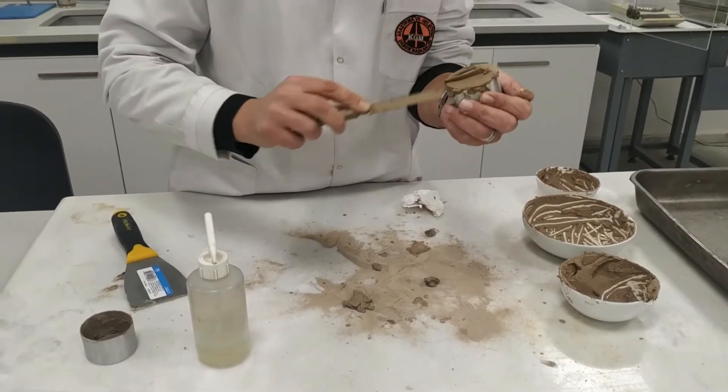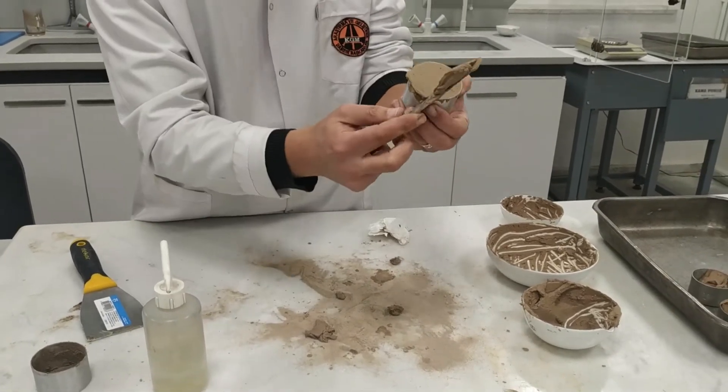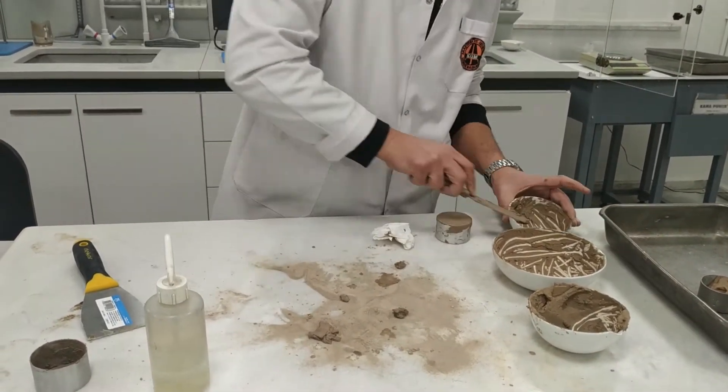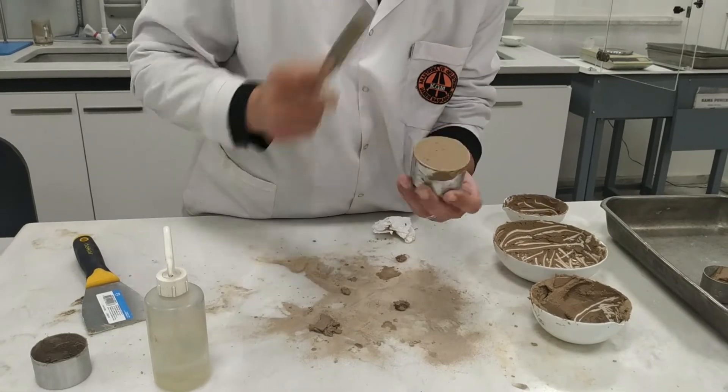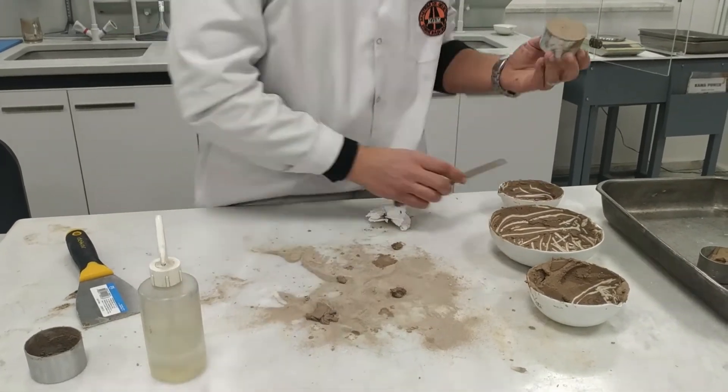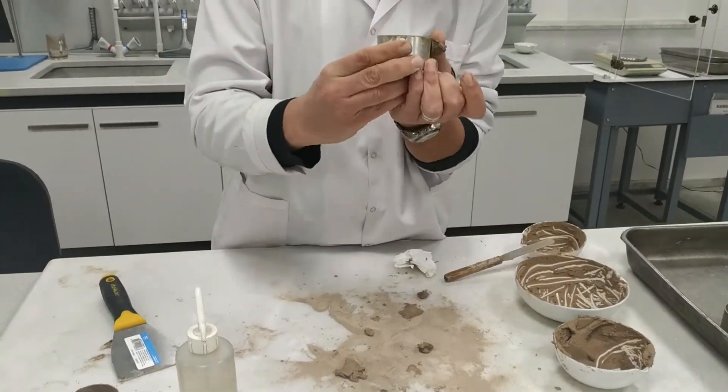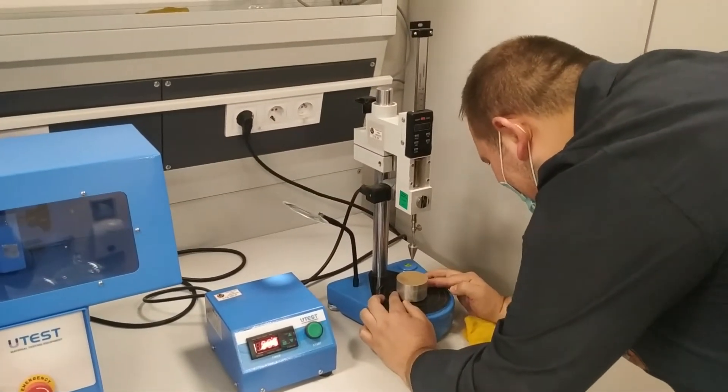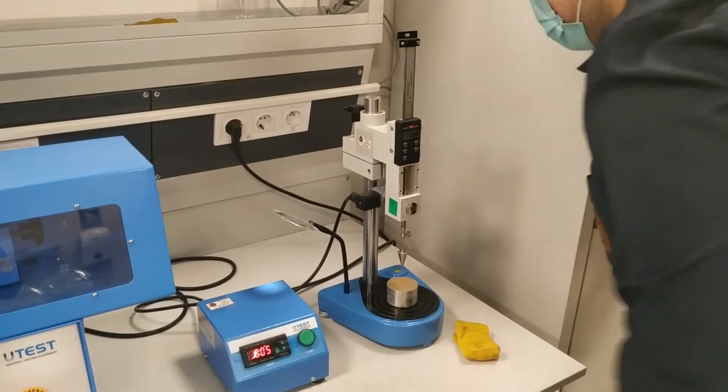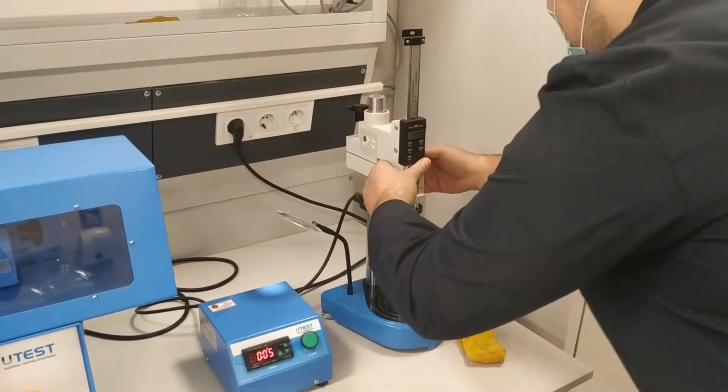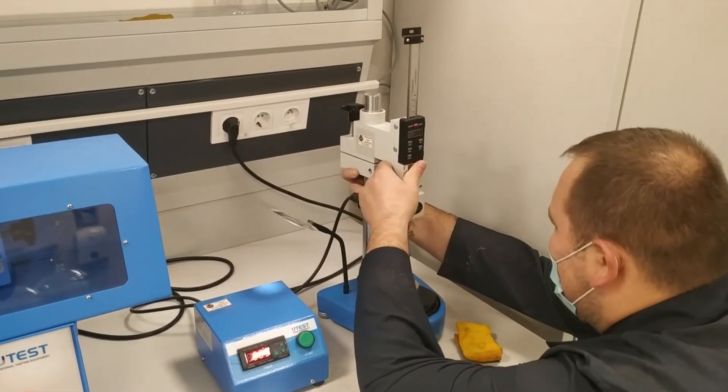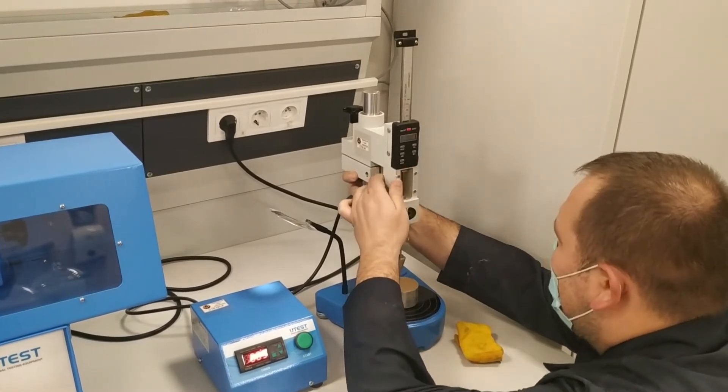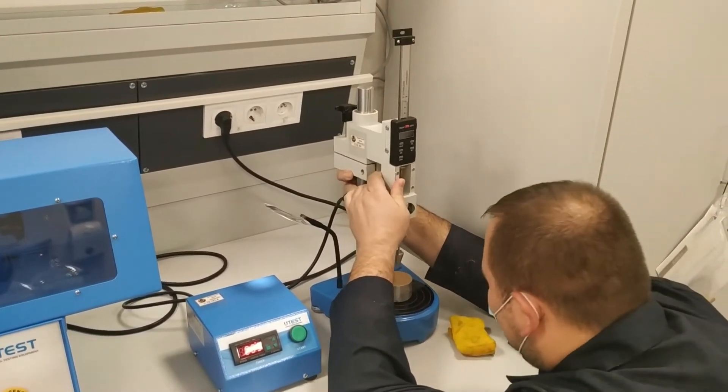Lock the penetration cone in the raised position. Lower the supporting assembly so that the tip of the cone just touches the surface of the soil. Once the cone is locked in position, either zero the depth penetration measuring device or record the initial position of the cone shaft to the nearest 0.1 millimeter.